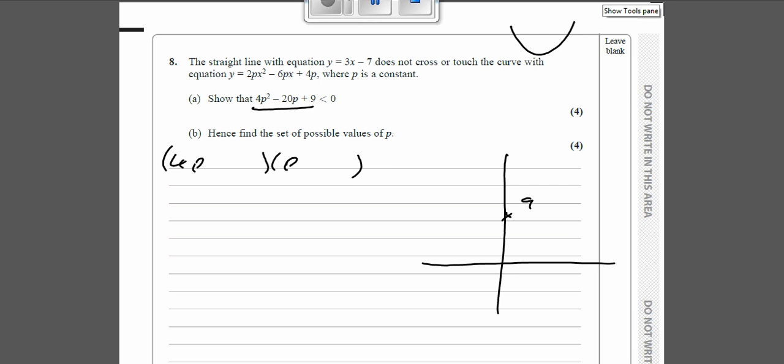So things that go to 9 are 9 and 1, which don't work, 3 and 3, which doesn't work. Let's try 2p and 2p and 9 and 1. So that's going to be minus 18p and that's going to be minus 2p, which makes minus 20p, so yeah it does factorize.